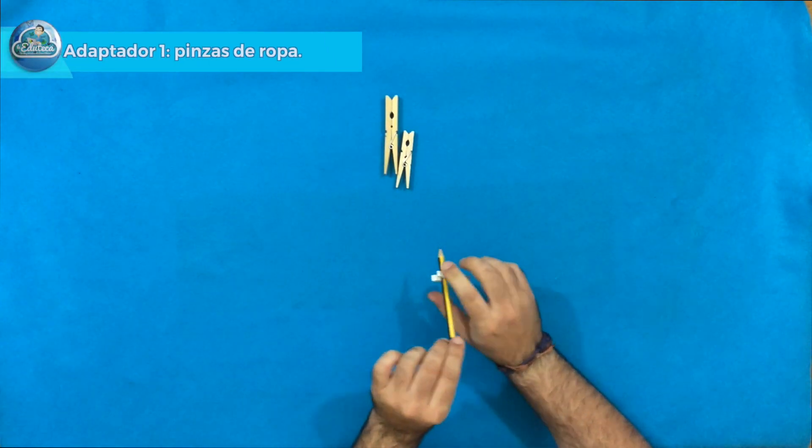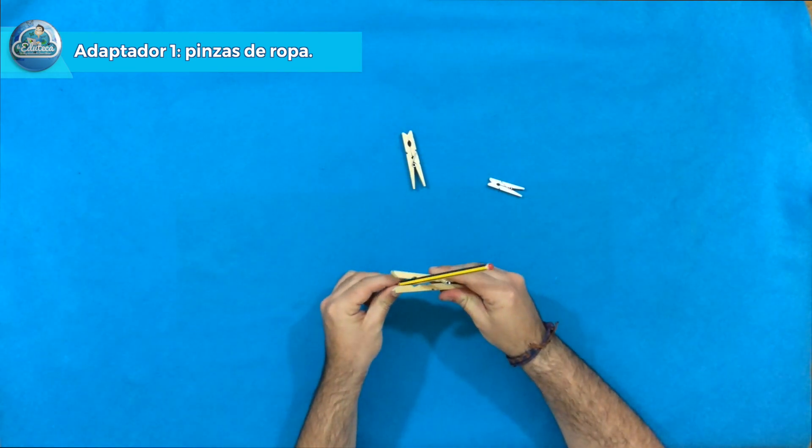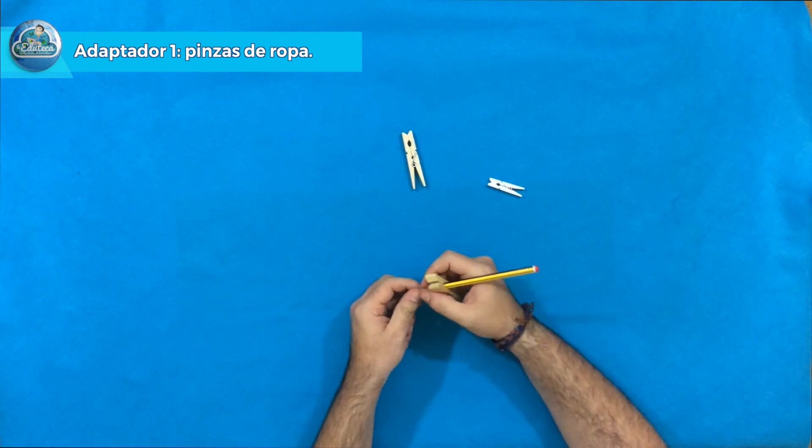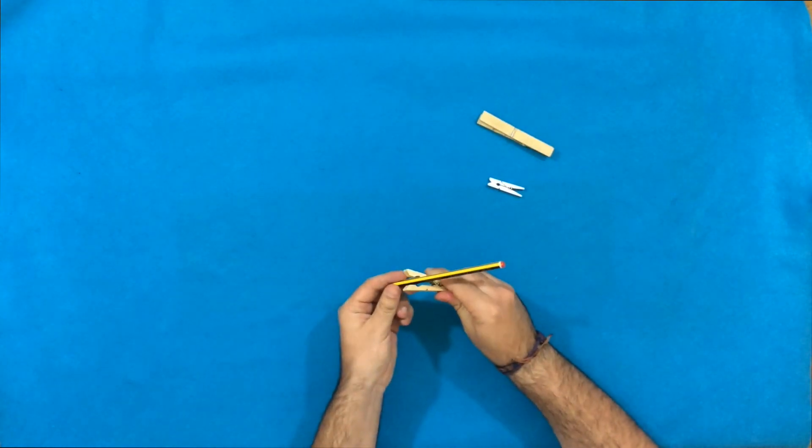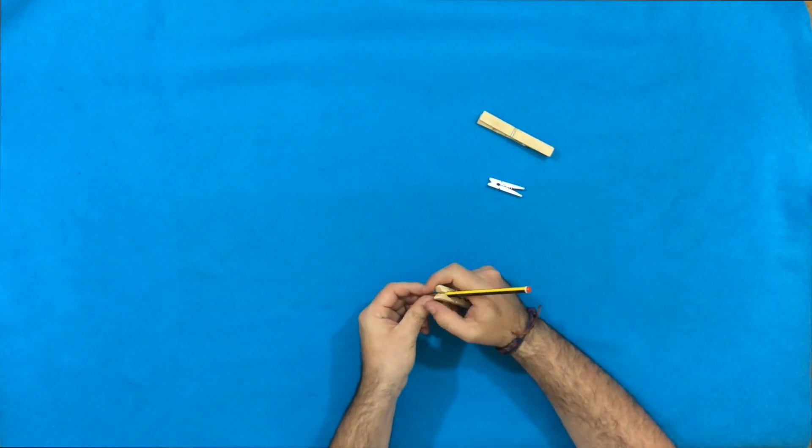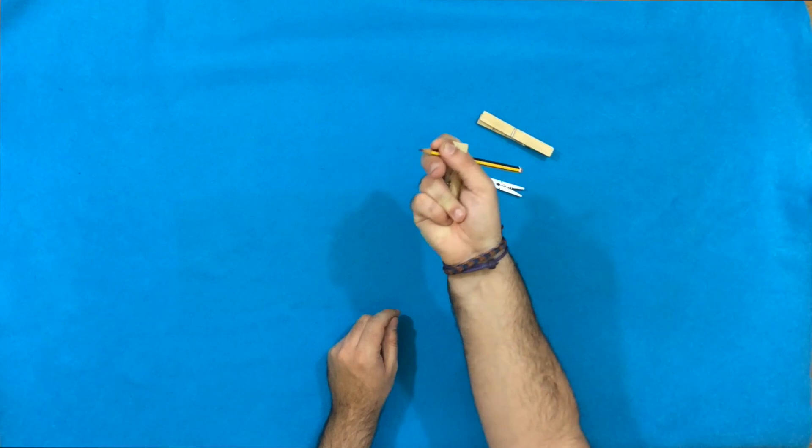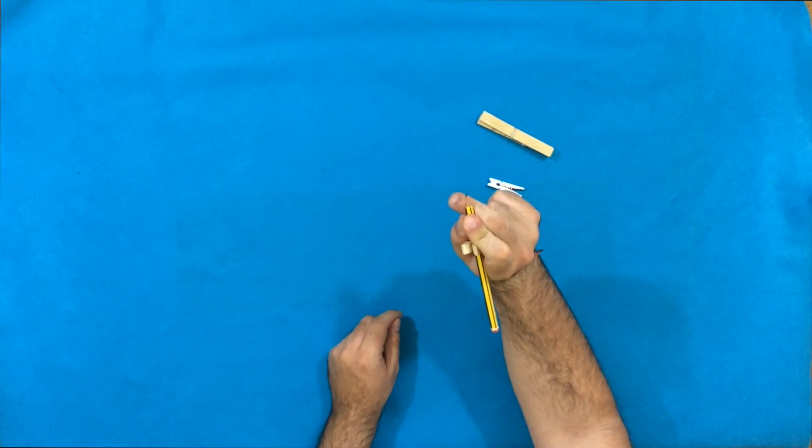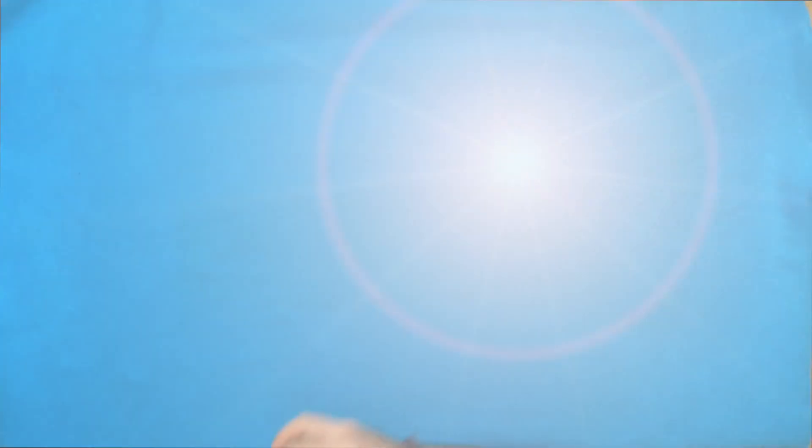Comenzamos con el adaptador número 1, las pinzas de ropa. Es tan sencillo como poner la pinza. Yo he probado con la grande, la grande no me va y he probado con una mediana. Como vais a ver ahora la inserto en el lápiz y simplemente se trata de agarrar toda la pieza que compone la pinza y nos servirá para sobre todo mantener de forma ordenada y adecuada lo que es la parte cubital.